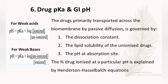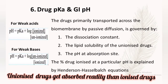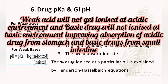The next factor is drug pKa and GI pH. Drugs primarily transported across biomembranes by passive diffusion are governed by the dissociation constant, the lipid solubility of the unionized drug, and the pH of the absorption site. The percentage of drug ionized at a particular pH is explained by the Henderson-Hasselbalch equation. Lesser the ionization of drug, greater will be the absorption.